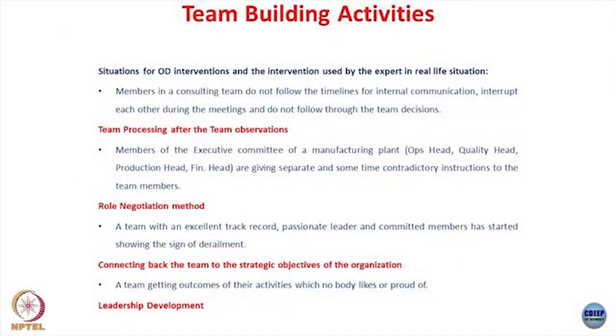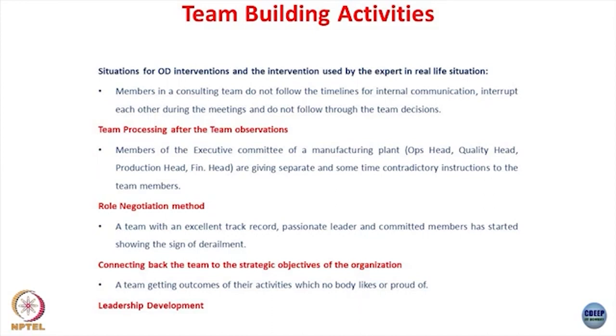A team with an excellent track record, passionate leader, and committed members starting to show signs of derailment — this is a Type 3 problem. The team is not able to see its connection to the larger organization or what is expected from it in changing times. A team getting outcomes that nobody is proud of is generally a case of leadership — the team may be aware that what they are doing is not wonderful, but they are not able to chart out a new path, because that requires leadership. Without leadership, team efforts cannot be directed in one specific direction.